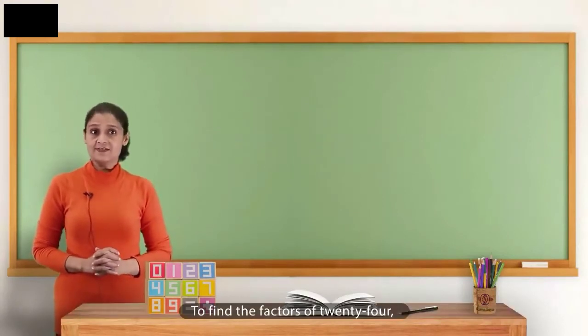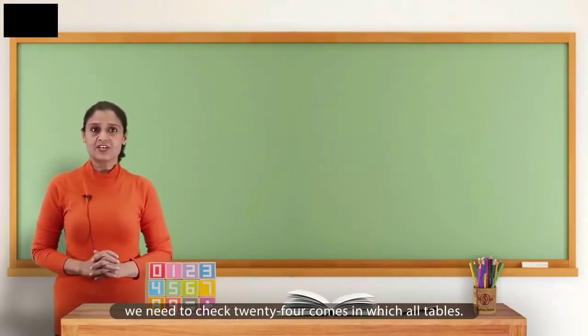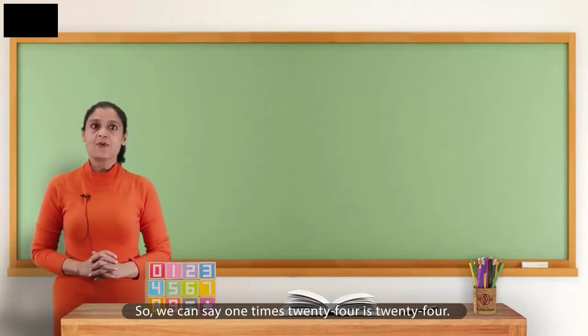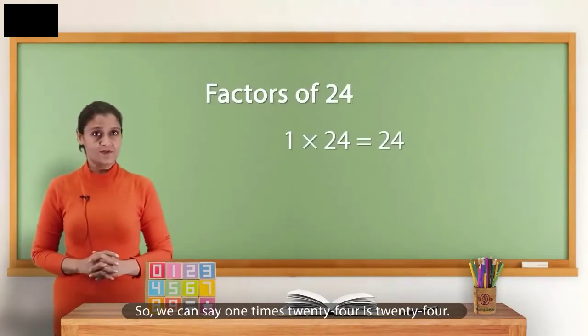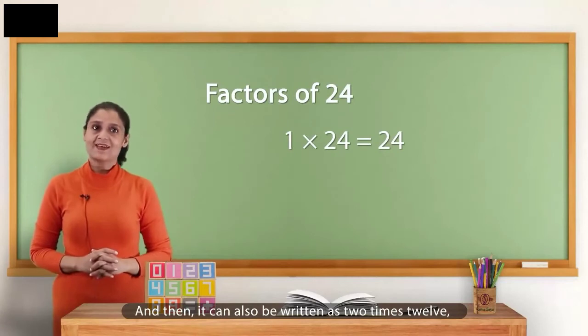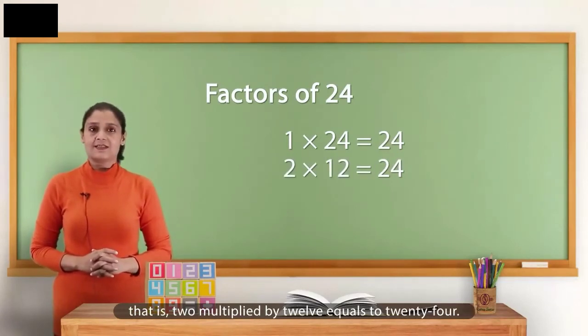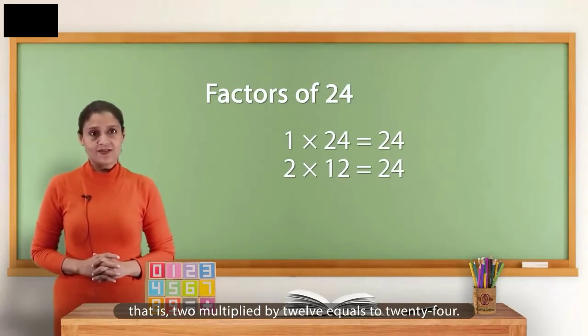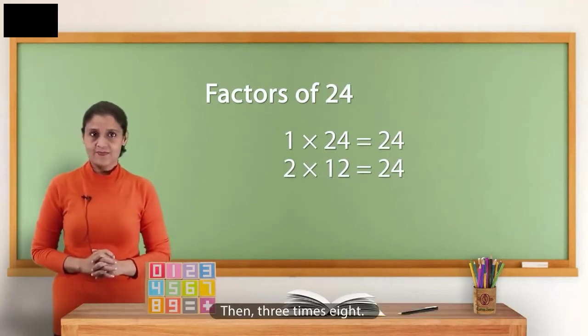To find the factors of 24, we need to check 24 comes in which all tables. So, we can say 1 times 24 is 24. 1 multiplied by 24 equals to 24. And then, it can also be written as 2 times 12. That is, 2 multiplied by 12 equals to 24.